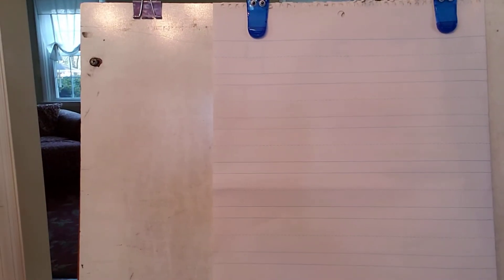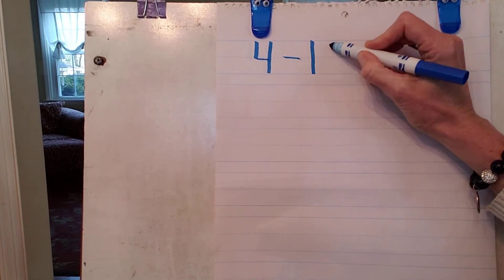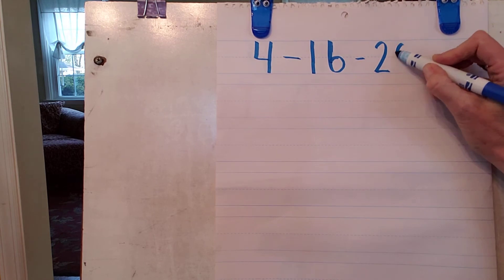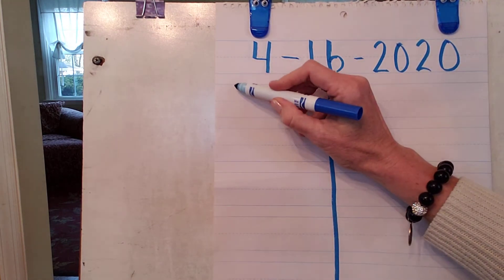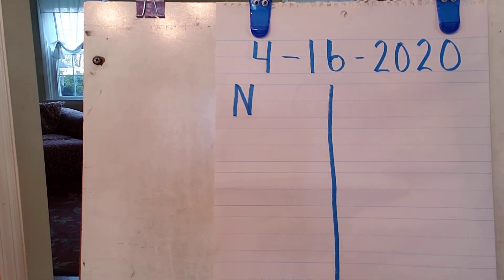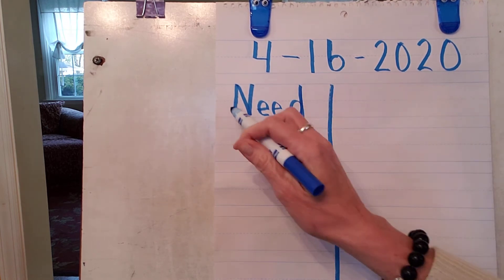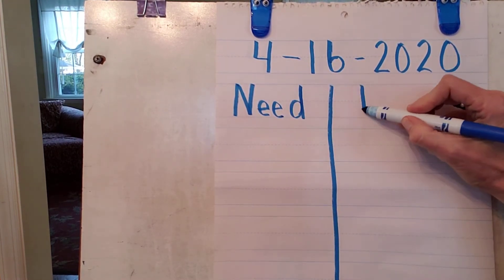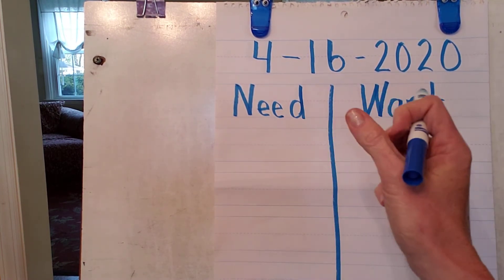So what we're going to do today in our copy books — I'd like you to get out your copy books. Just like we always do, at the top of the page we're going to write the date: 4-16-2020. Then you're going to draw a line down the middle. On this side, I want you to write the word 'need' — N-E-E-D. And on this side, I want you to write 'want.'